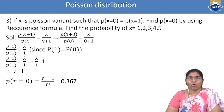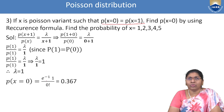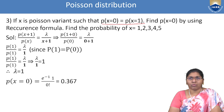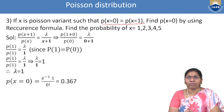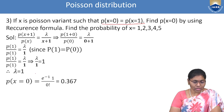Problem: X is a Poisson variate with P(X=0) = P(X=1). Find P(X=0) using the recurrence formula, then find probabilities for x = 1, 2, 3, 4, 5. Using recurrence: P(1)/P(0) = λ/1 = λ. Since P(0) = P(1), their ratio = 1, so λ = 1.